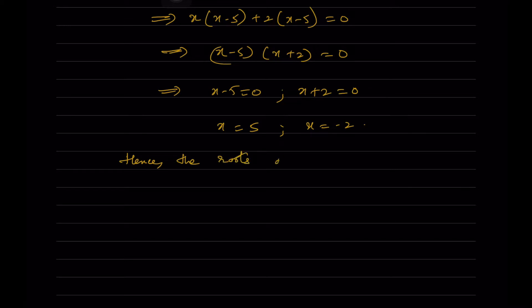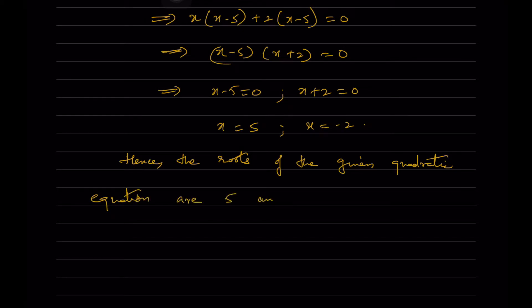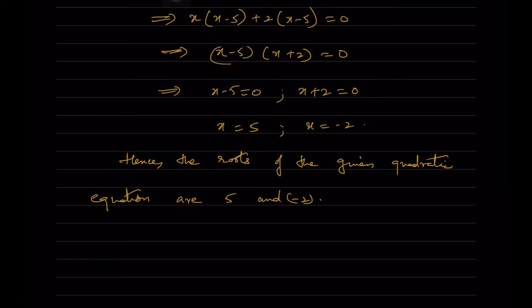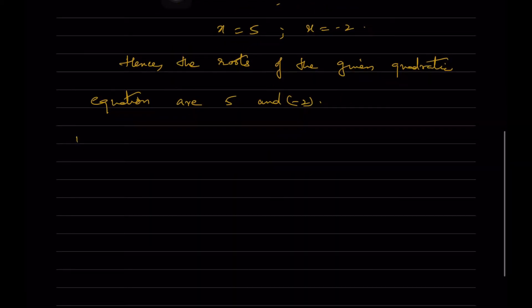Hence the roots of the given quadratic equation are 5 and -2. Now going into the second one: 2x² + x - 6 = 0.